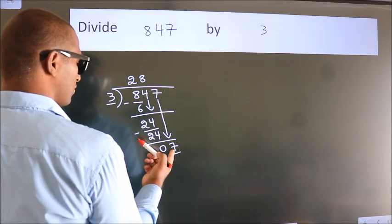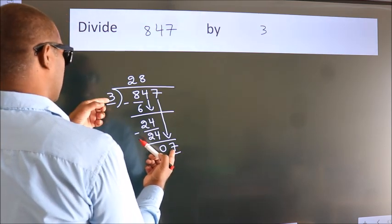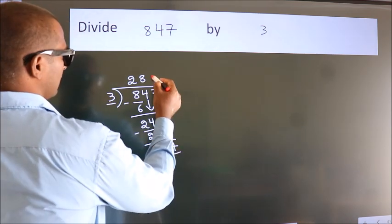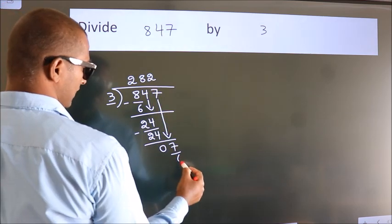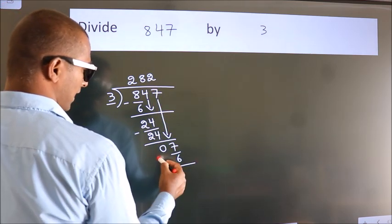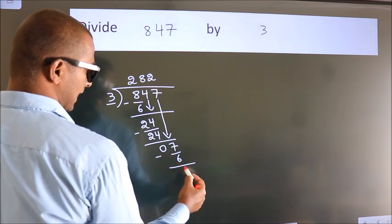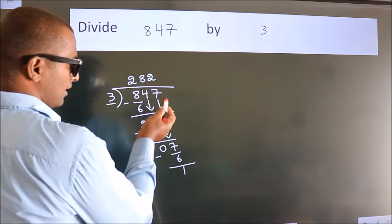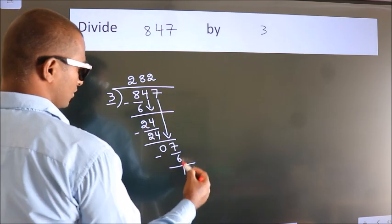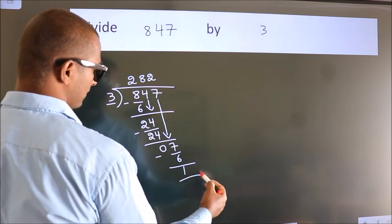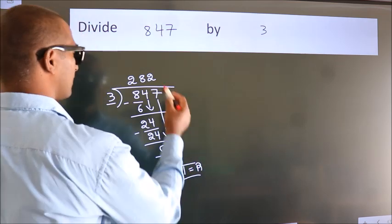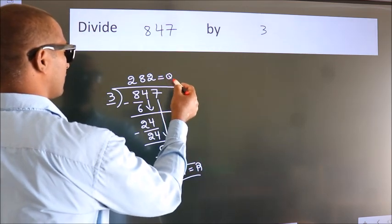A number close to 7 in the 3 times table is 3 twos, which is 6. Now we subtract. We get 1. No more numbers to bring down, so we stop here. This is our remainder. This is our quotient.